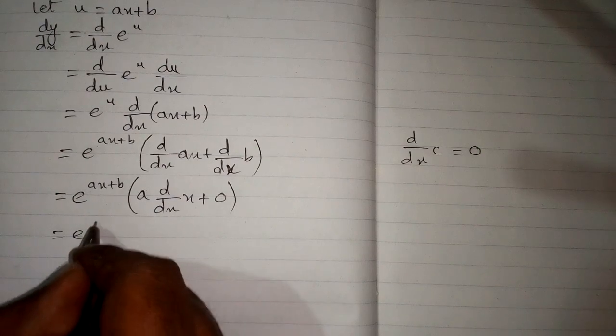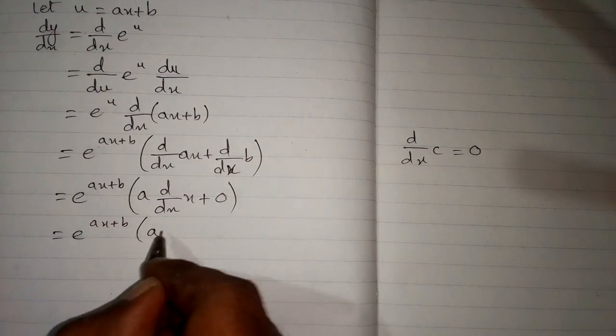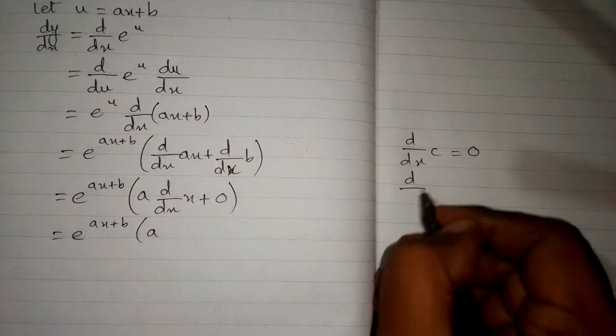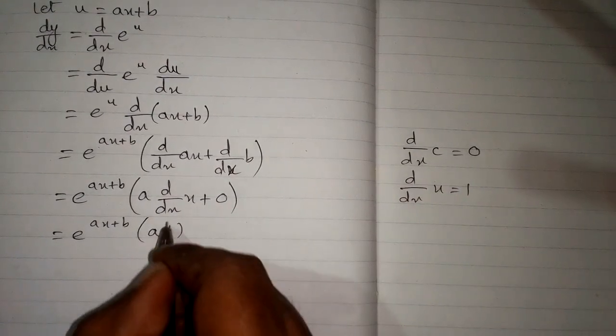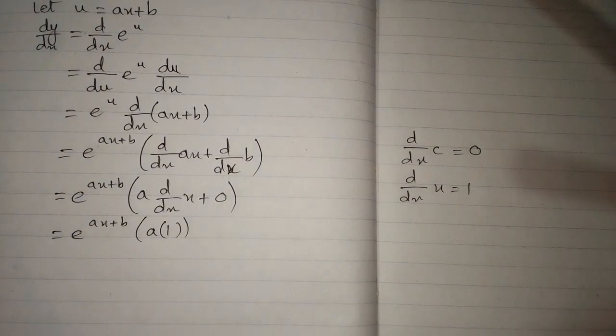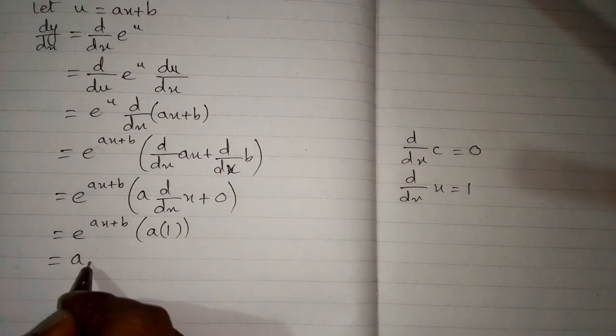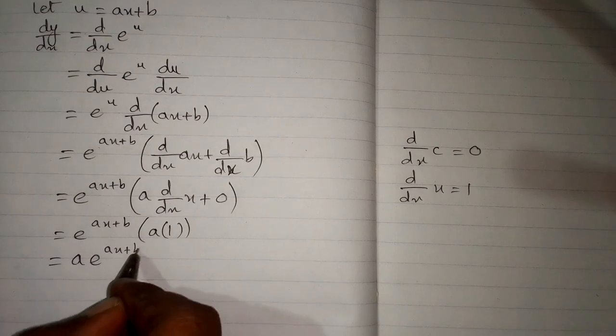And then we have e to the power ax plus b, and the derivative of x is 1, so we will put 1 over here. Now a times 1 is a, so we have a times e to the power ax plus b, and this is the required answer.